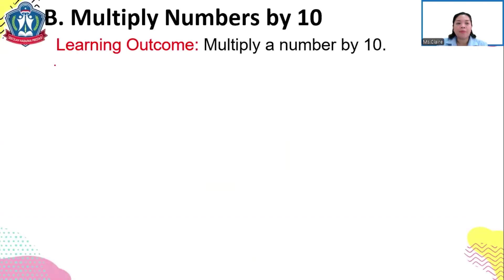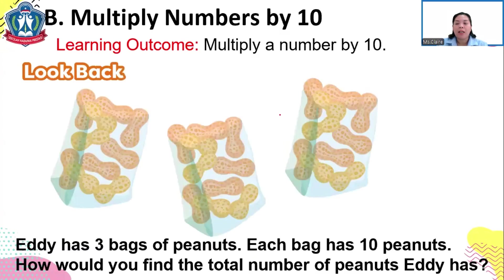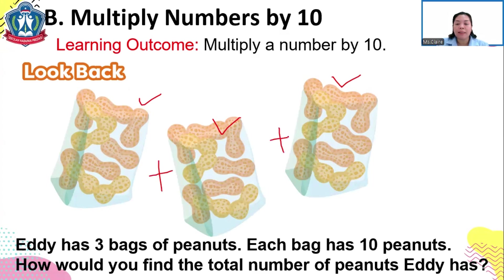Now we are on Lesson B: Multiplying Numbers by 10. I have here some bags of peanuts — 3 bags, with 10 peanuts in each bag. To find the total number of peanuts, Eddie adds: 10 plus 10 plus 10 equals 30. But there is another way to find the total without using addition.